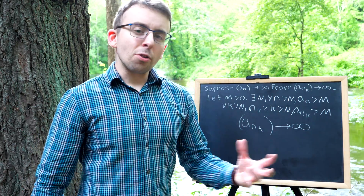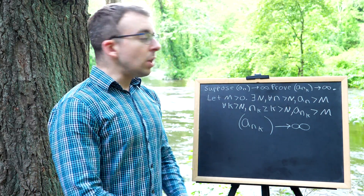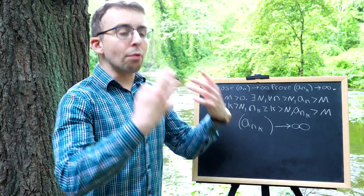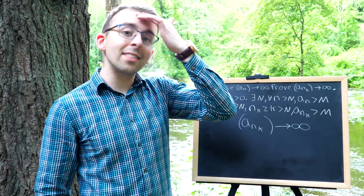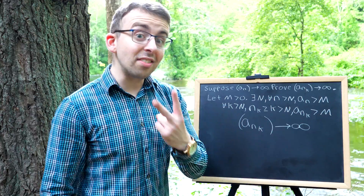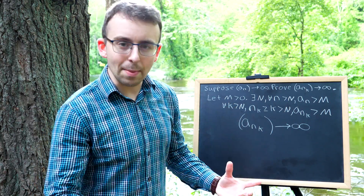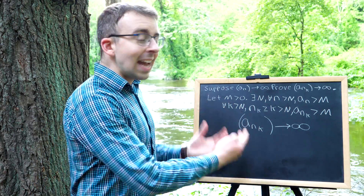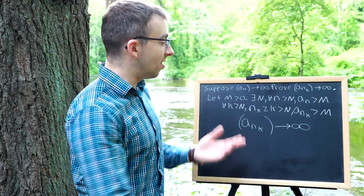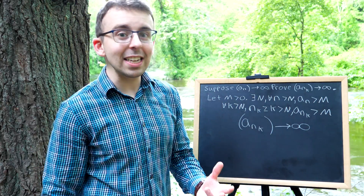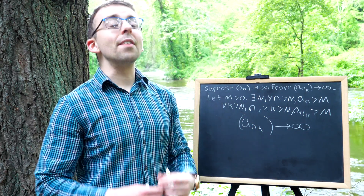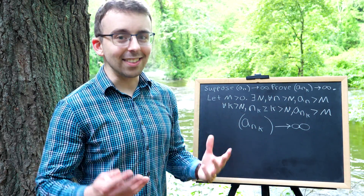One last interesting thing to note: we've talked about how we can prove a sequence diverges by finding two sub-sequences with different limits. But now we see that strategy won't work for sequences that diverge to infinity, because all of its sub-sequences behave exactly the same.